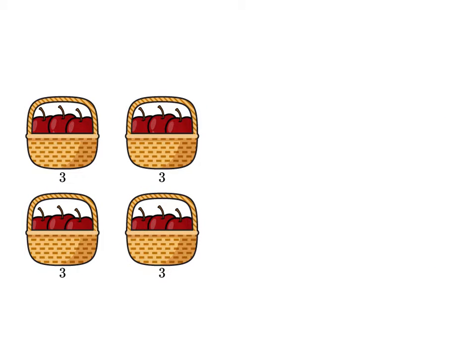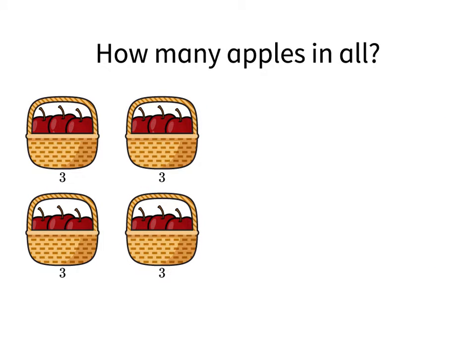In this problem, we don't know how many apples there are, so the total is missing. We can use the information shown — 4 baskets with 3 apples in each basket — to write a multiplication equation.